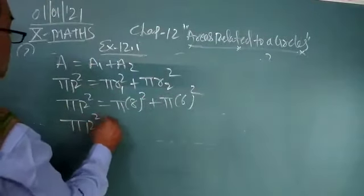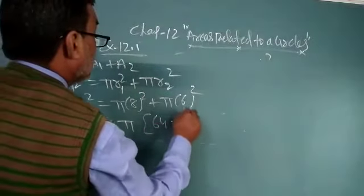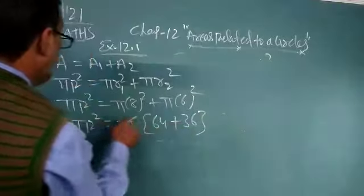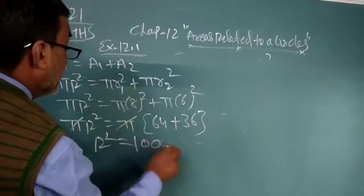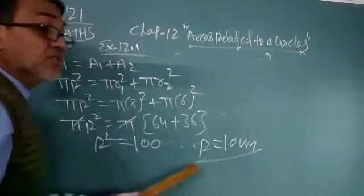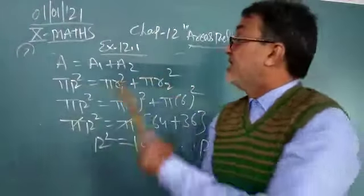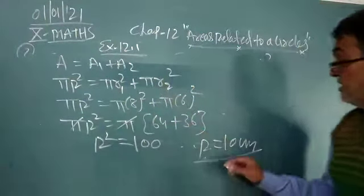Pi R square equal to pi common, 8 square means 64 plus 6 square means 36. Pi cancel. R square equal to 100. Therefore R equal to 10 centimeter. The radius of the new circle whose area equals the sum of the area of these two circles is 10.